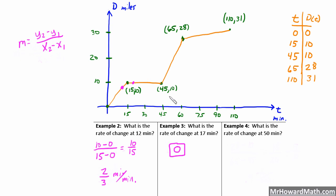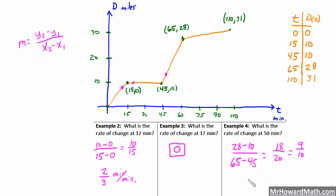Example four: what is the rate of change at 50 minutes? At t = 50 we're on the third piece, using points (45, 10) and (65, 28). Slope = (28 − 10) / (65 − 45) = 18/20 = 9/10, which is also 0.9. So his rate of change at 50 minutes is 0.9 miles per minute — that's his speed through this entire segment from t = 45 to t = 65.